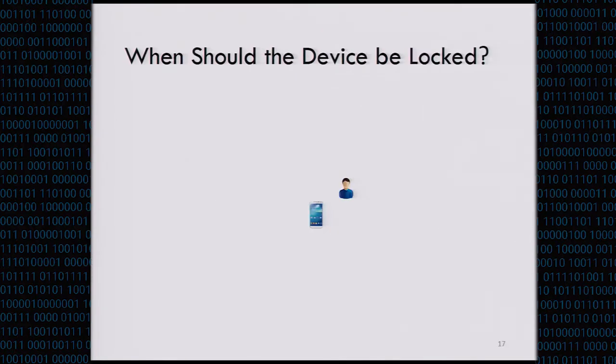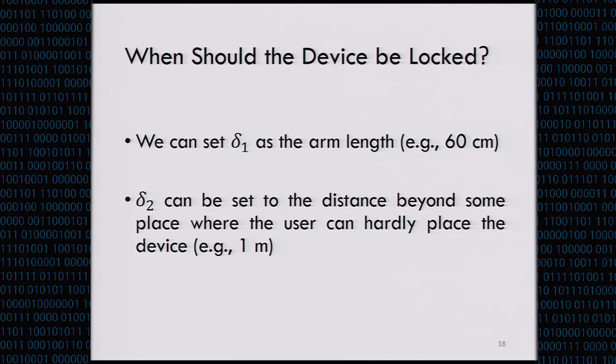After we extract the trace of the user, the system should decide whether we need to lock the device. We present two conditions. First, the distance between the user and the device needs to start below Delta 1. And then, the user's final distance exceeds Delta 2. Only when the trace meets these two conditions can we lock the device. We can set Delta 1 as the arm length, for example, like 60 centimeters, because most people would place their devices within arm's reach. And Delta 2 can be set to the distance beyond somewhere the user can hardly place the device, for example, like one meter.